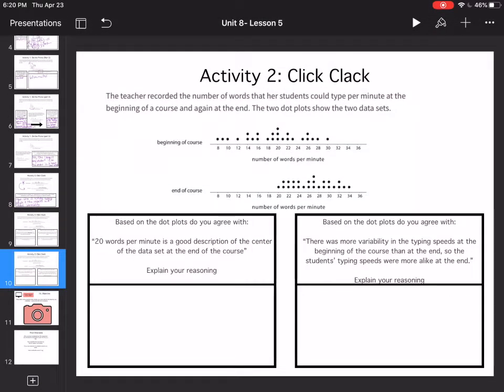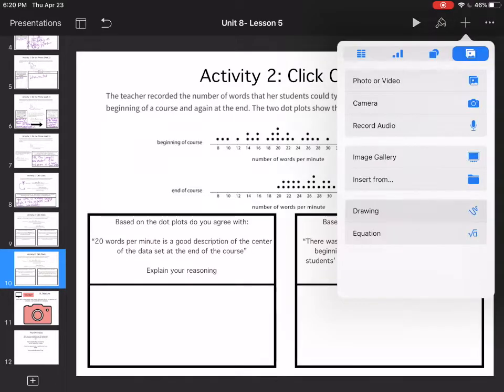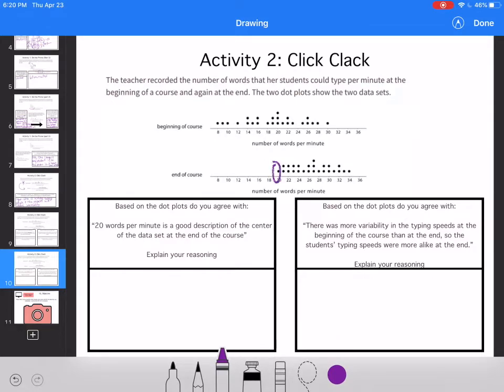So then I'm going to look at, based on the dot plot, do you agree with 20 words per minute is a good description of the center of the data at the end of the course? Well, I would disagree, because when you look at 20, that's the very first dot. So I would say no.